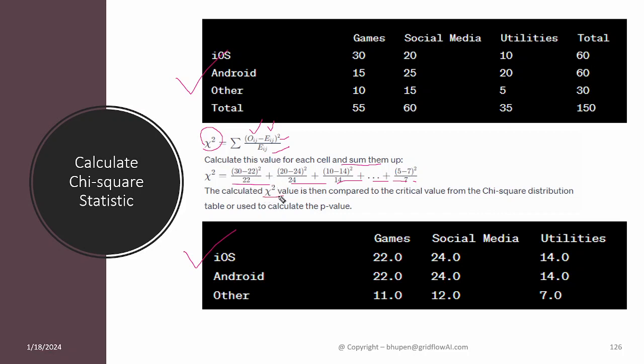And the algorithm is going to use this chi-square value to then compare with the critical value from the chi-square distribution, or it is also used to give us the probability value. We can make use of probability value to conclude, or we can make use of the chi-square value against the critical value to conclude.